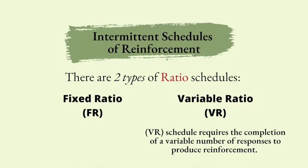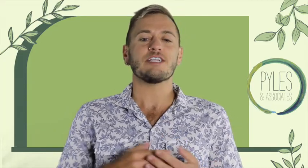A variable ratio, or VR, schedule of reinforcement requires the completion of a variable number of responses to produce reinforcement. For example, a VR2 schedule means the behavior is reinforced on an average of every two correct responses. This means the client can be reinforced on the first, second, or even third correct response, as long as the average across all responses is every two. A VR schedule is the preferred schedule of reinforcement because it maintains a moderate and consistent rate of responding since the reinforcement delivery is unpredictable. Also, it does not create a post-reinforcement pause.